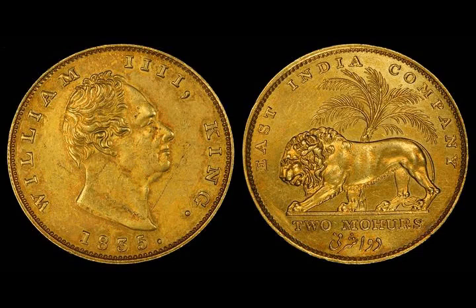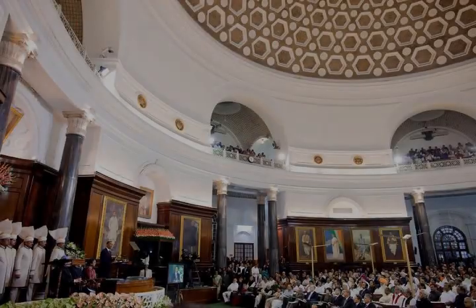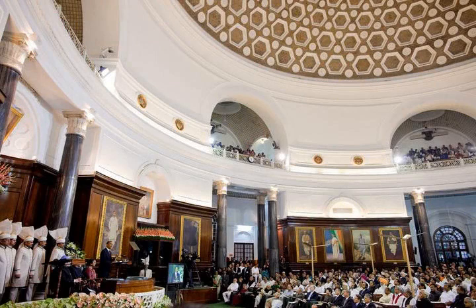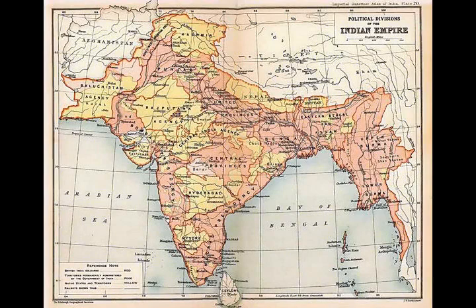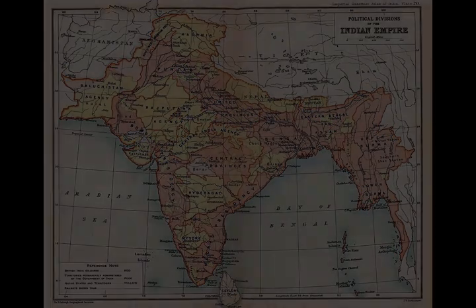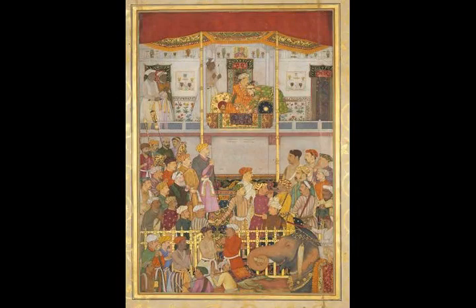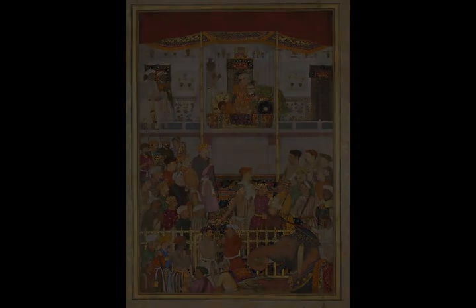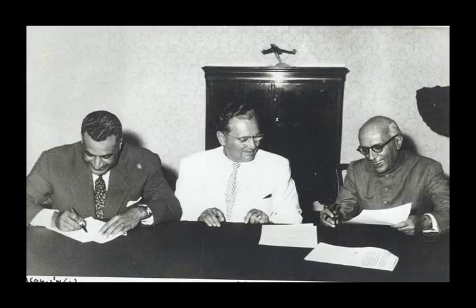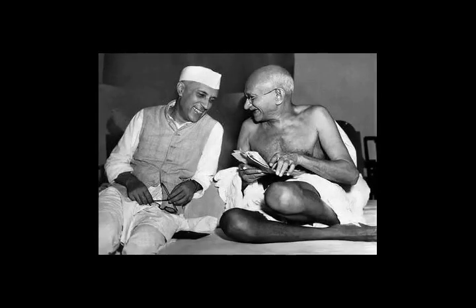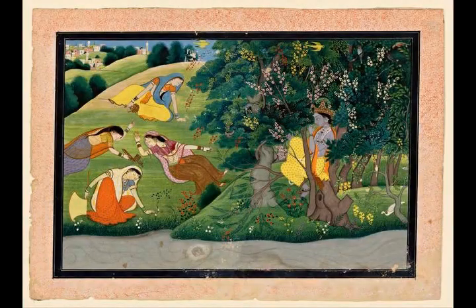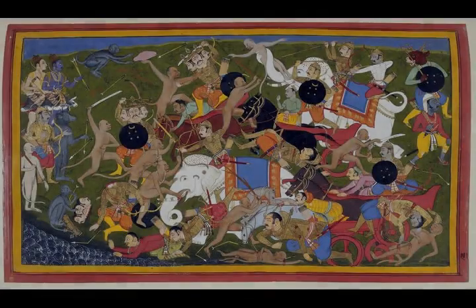In the 2011 census, about 73% of the population was literate, with 81% for men and 65% for women. This compares to 1981 when the respective rates were 41%, 53% and 29%; in 1951 the rates were 18%, 27% and 9%. India has over 900 universities, 40,000 colleges and 1.5 million schools. In India's higher education system, a significant number of seats are reserved under affirmative action policies for the historically disadvantaged. In recent decades, India's improved education system is often cited as one of the main drivers of its economic growth.